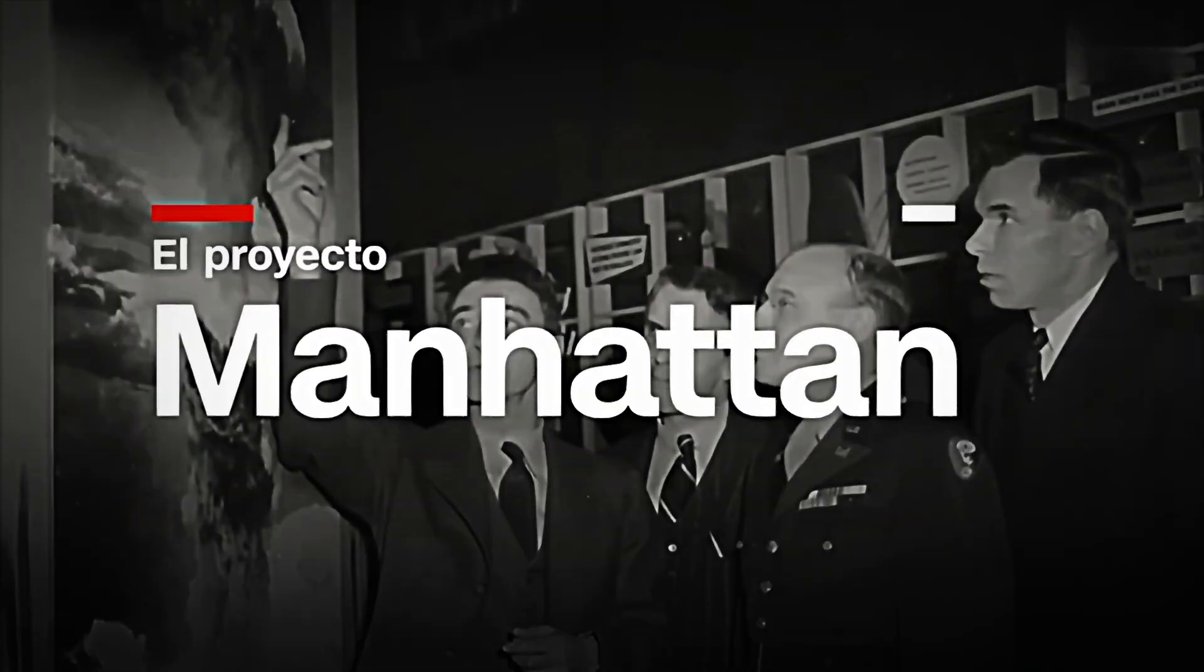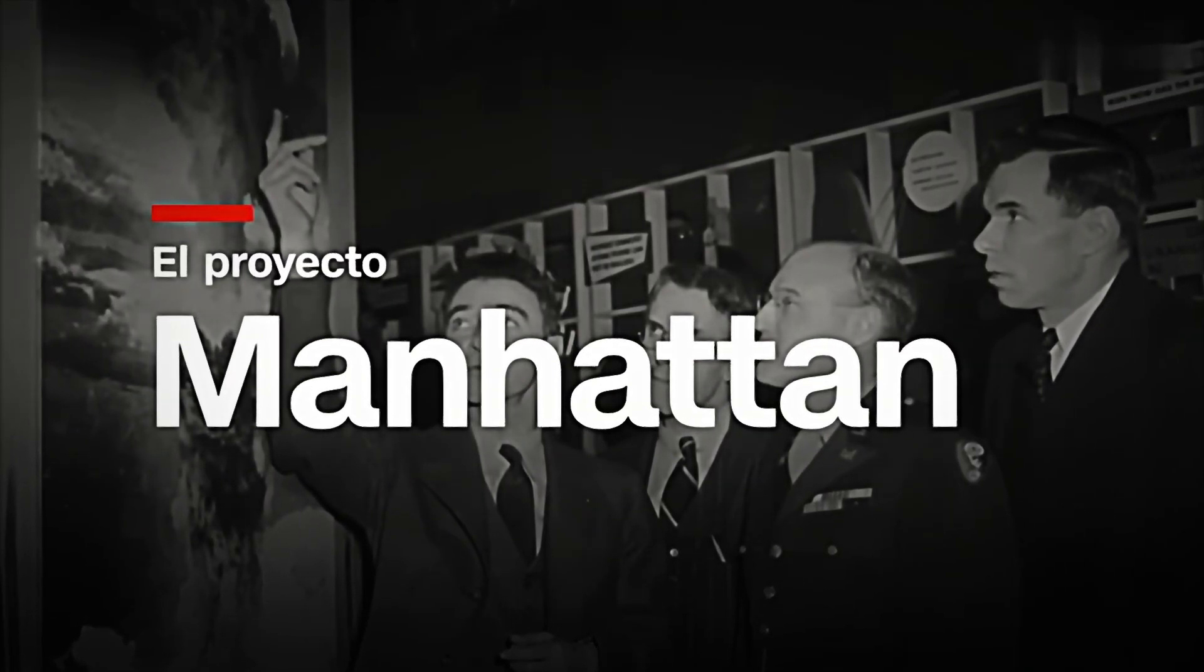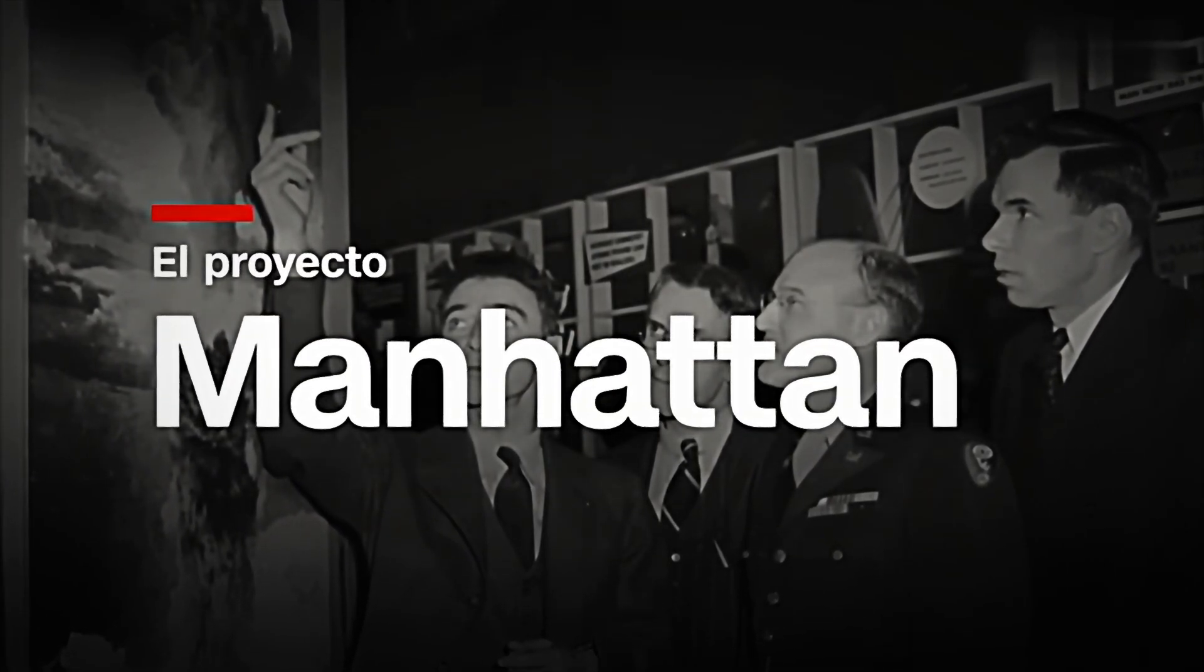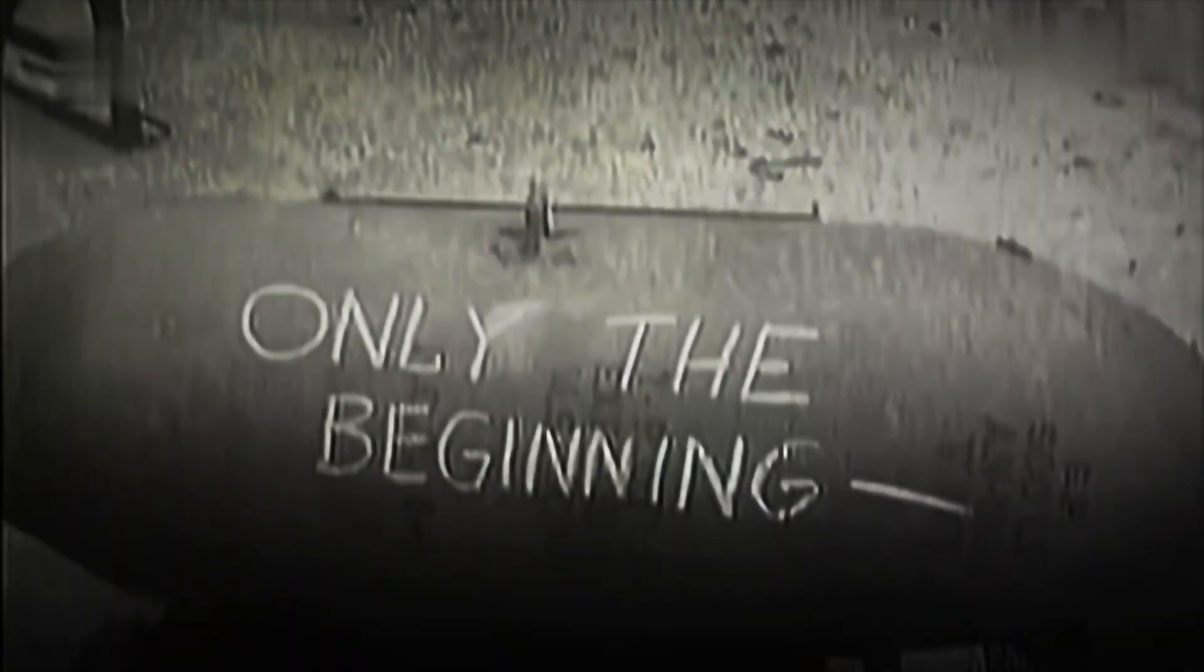Shortly thereafter, in the midst of World War II, the Manhattan Project used the isotope plutonium-239 to build nuclear weapons, including the atomic bomb dropped on Nagasaki in August 1945.